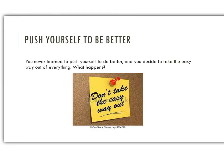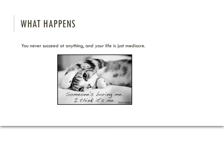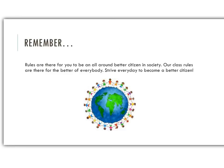You never learned to push yourself to do better and you decide to take the easy way out of everything. What happens? You could never succeed at anything and your life would just be mediocre. Remember, rules are there for you to be an all-around better citizen in society. Our class rules are there for the better of everybody. Strive every day to become a better citizen. Thank you for listening.